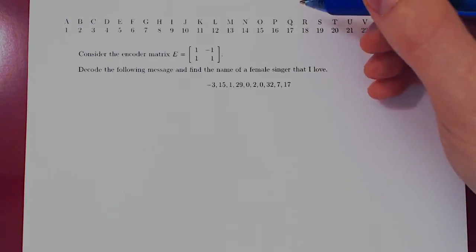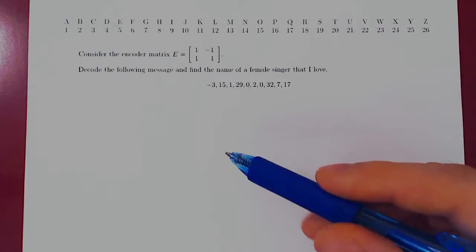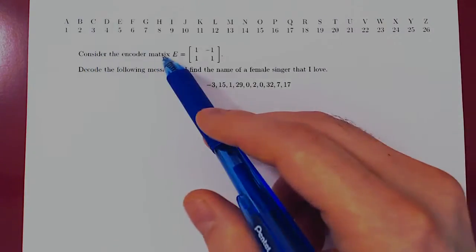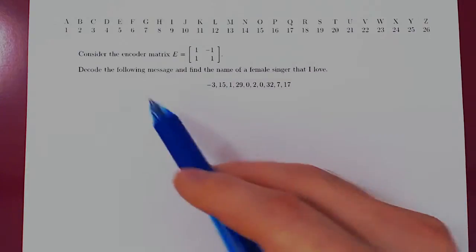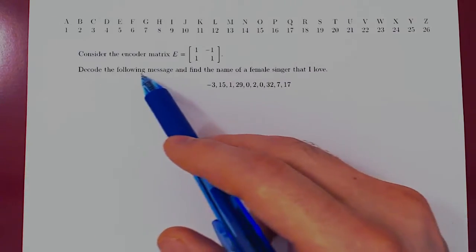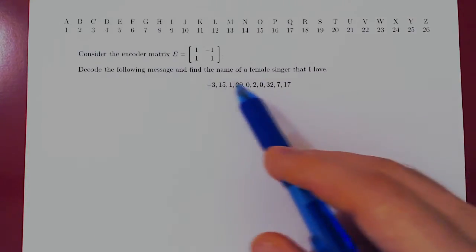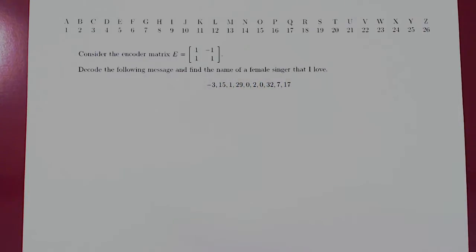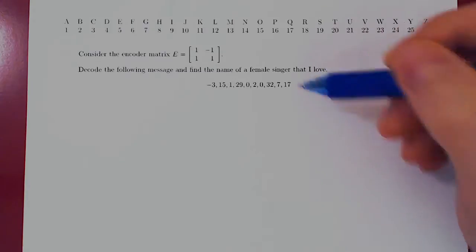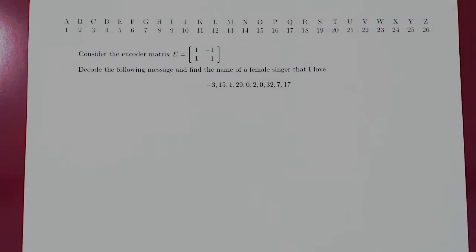Okay, so in this video we will consider a short example of cryptography. So we consider the encoder matrix 1, negative 1, 1, 2, so a 2 by 2 encoder matrix, and we have to decode the following message and find the name of a female singer that I love. Intriguing. Well, let's figure this out.